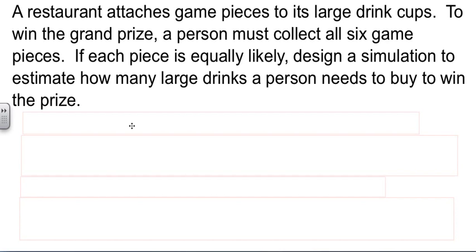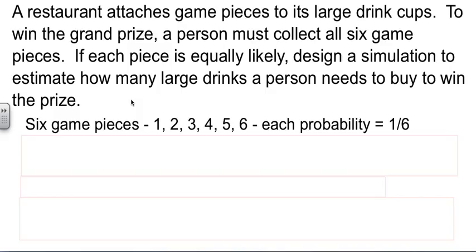First thing we need to do is determine the outcomes and the probability. They tell me there's six game pieces, so I'm going to call them 1, 2, 3, 4, 5, and 6. And each probability, they said, was equal, so one chance out of six for each one of those.